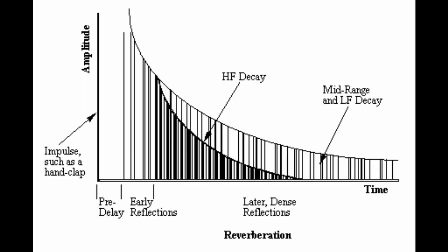At different frequencies, as you can see in chart eight, higher frequencies are much easier to absorb because they have less energy and shorter wavelengths, so materials can capture them more easily. In this chart you can see that the high-frequency decay is quicker than that of the lower frequencies, and the lower the frequency, the harder it is to control.